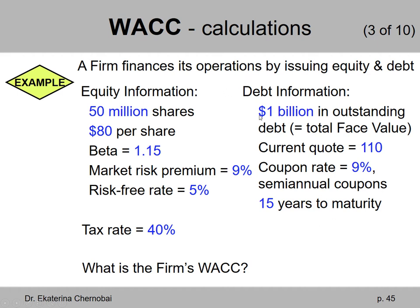For debt information: $1 billion in outstanding debt — this is the total face value of all bonds. The current quote equals 110, coupon rate equals 9%, semi-annual coupons, 15 years to maturity. We are also given the tax rate of 40%.